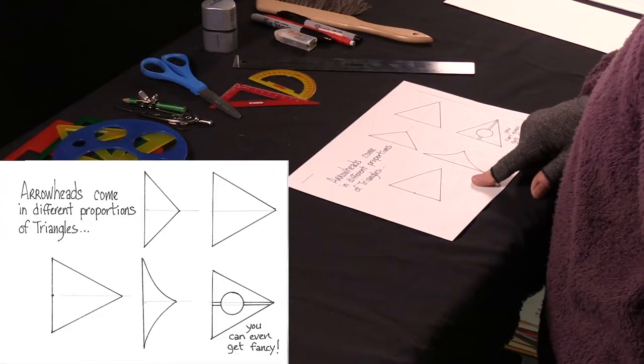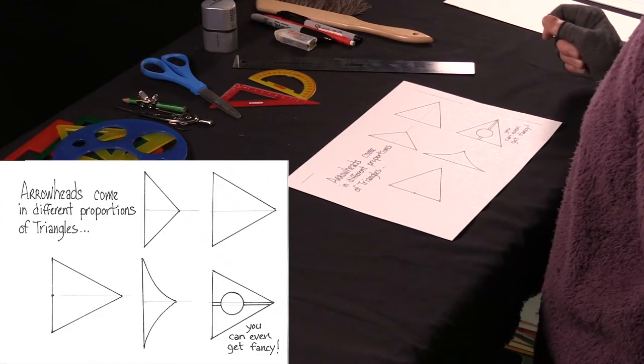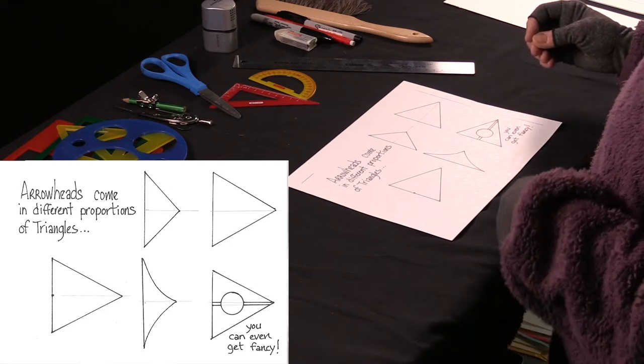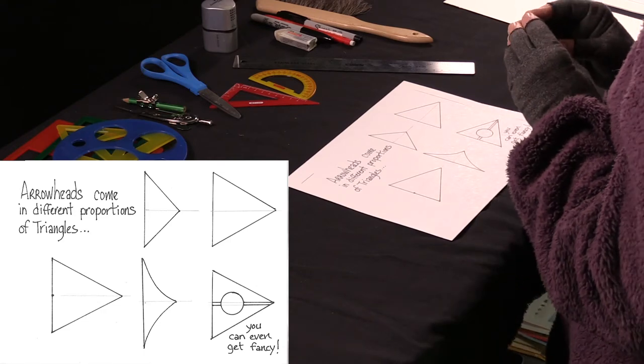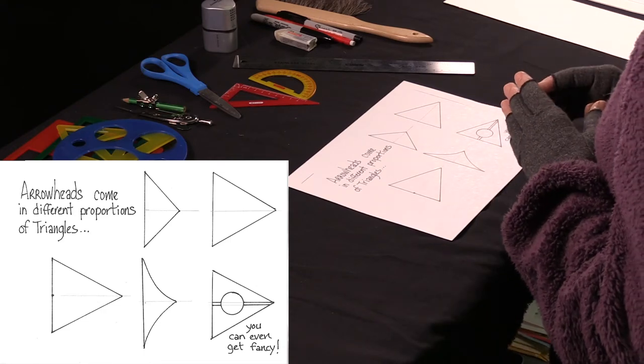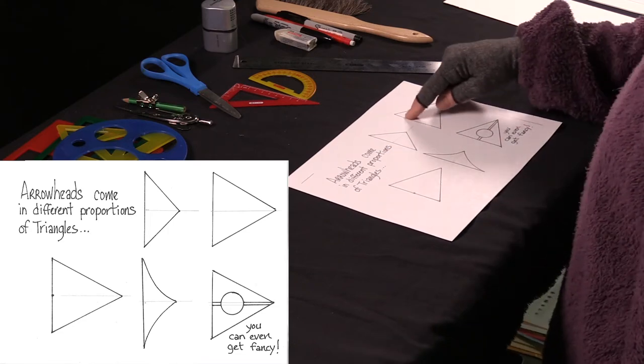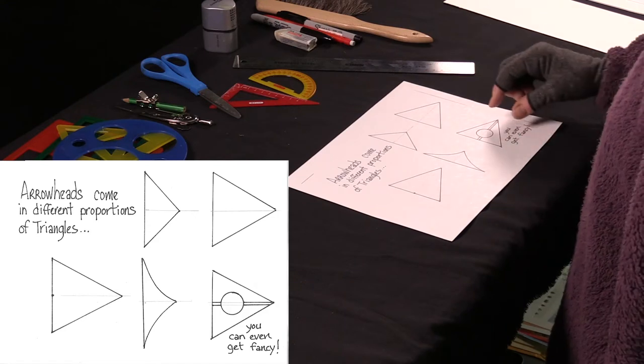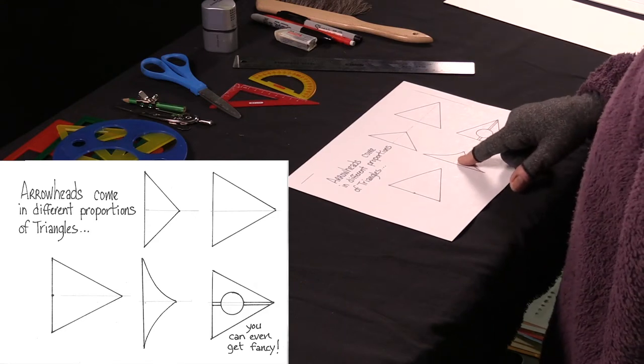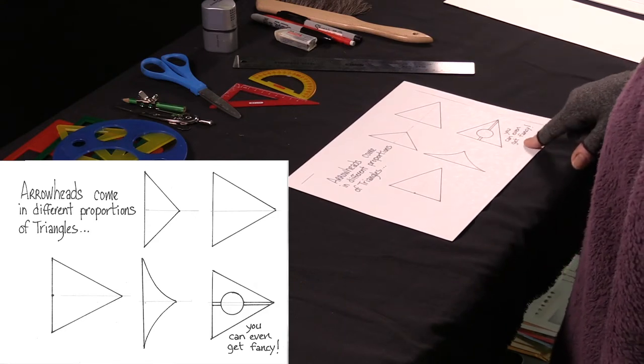First of all, I just want to mention that the arrowheads, that are the most important part of the arrow, in a way, they come in many different proportions. Do you notice how these triangles, some of them are wide, some of them are thin, some of them are purely decorative. You can get fancy.